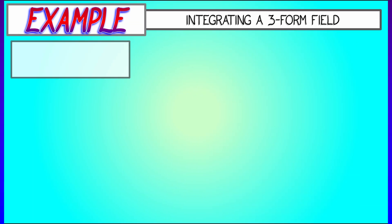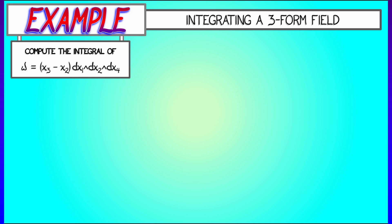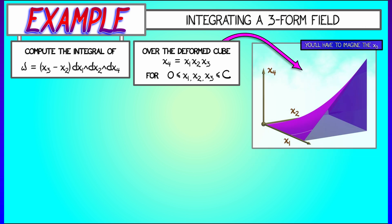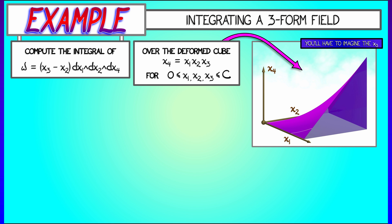Let's take a look at an example where we're integrating a three-form field in 4D. Consider omega given by (x3 minus x2) times dx1 wedge dx2 wedge dx4. We're going to integrate that over something three-dimensional — a cube given by x1, x2, and x3 going from zero to c, and x4 being the graph of this cube given by x4 equals x1 times x2 times x3. In x1, x2, x3 space this looks like a cube, but including the x4 axis it looks deformed — one corner pulled up and the other squashed down to zero. That's really hard to represent visually.